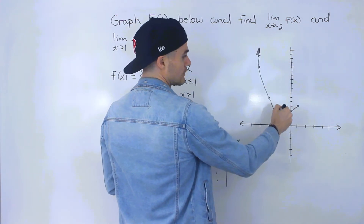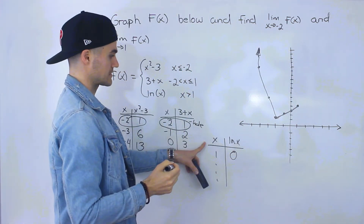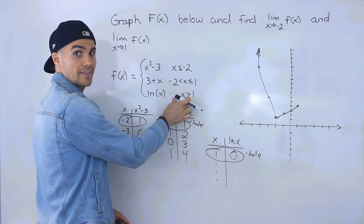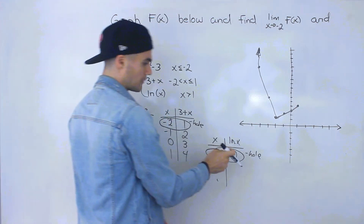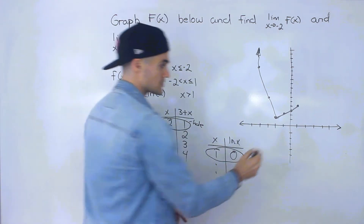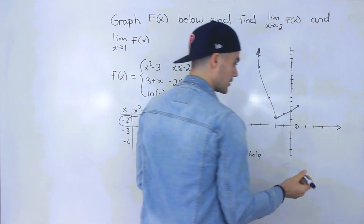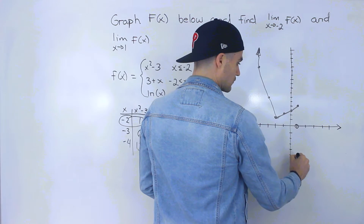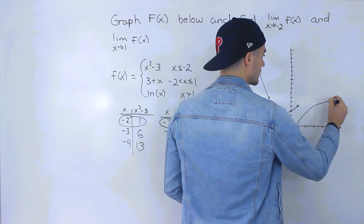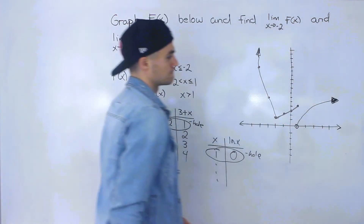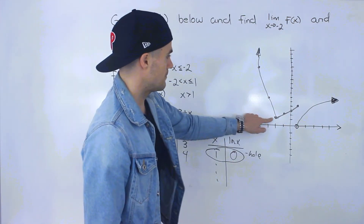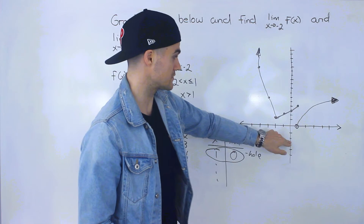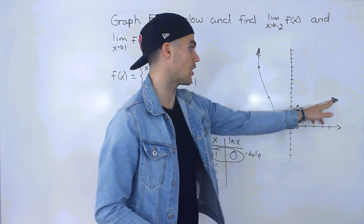So we have the parabola, then the line. For ln x, at (1, 0), this is going to be a hole because it's not defined at that x value of one. We know ln x — the graph looks like a logarithmic curve — so following that pattern, it goes something like that. The parabola goes down to the vertex and back up, then we have the line, then the ln x graph.